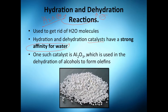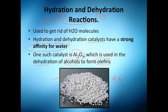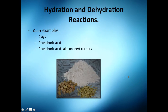The typical catalyst used for hydration and dehydration is alumina, which is aluminum oxide. It's used in the dehydration of alcohols and other forms. Here's an image of alumina — and you'll see later that alumina is also used to treat water.